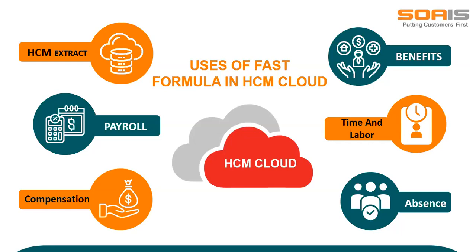Fast Formula is used in six different modules in HCM Cloud. First is HCM Extract, where fast formulas are written for user-defined tables. Next is Payroll, where we can use it for payroll calculations. Next is the Compensation module, where it is used for custom configuration. Next is the Benefits module, used for custom calculation. Then is the Time and Labor module, used for defining rules for paid time off. And last is the Absence module, where it is used for calculating the absence duration. These products provide a place to attach formulas whenever there is a need for complex or custom logic. The consultants add their own logic via a set of statements and sub-programs.